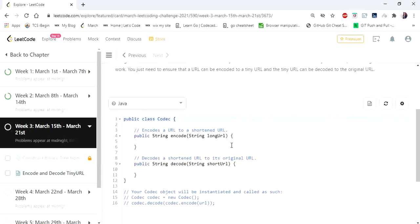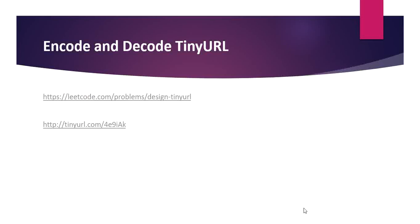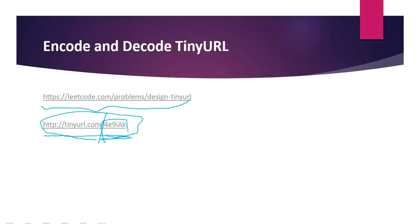We have to design two methods, encode and decode URLs. Here is our given input — this is our long URL and we have to return http://tinyurl.com, the short URL of the given long URL. If this is the URL given as input, we have to return back the long URL correspondingly.